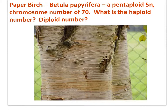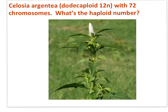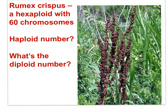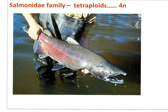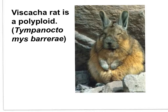The paper birch is a pentaploid with a chromosome number of 70. The haploid number N would be 70 divided by 5, that's 14, thus the diploid number would be 28. Seleucia argentia is a dodecaploid (12N) with 72 chromosomes — the haploid number would be 72 divided by 12, so N equals 6. Rumex crispus is a hexaploid with 60 chromosomes. Among polyploid animals, members of the salmon family are tetraploids, and the Vizcacha rat of South America is also a polyploid.